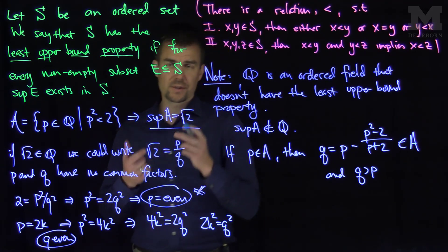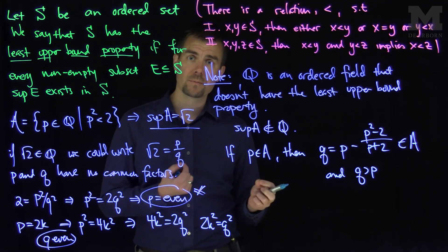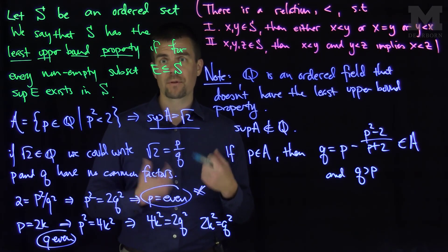So for every p in the set A, there's always a rational number that's larger than that. So there's no candidate for the supremum being in the set Q. That shows that Q does not have the least upper bound property.